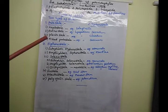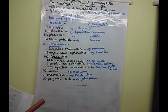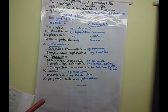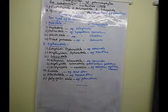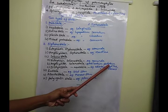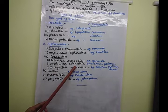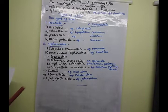Amphiphloic solenostele means the central pith is present, xylem elements are surrounded by phloem on both sides. The example is Adiantum pedatum.